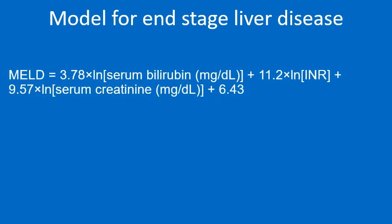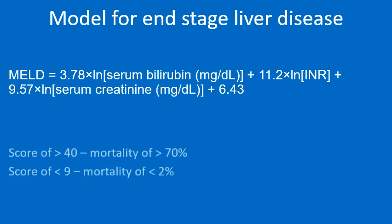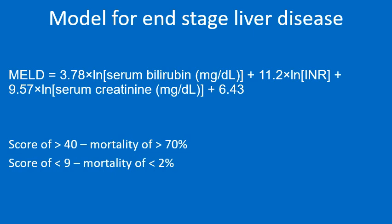The MELD (Model for End-Stage Liver Disease) score incorporates serum bilirubin, INR, and creatinine. The formula is: 3.78 × ln(serum bilirubin) + 11.2 × ln(INR) + 9.57 × ln(serum creatinine) + 6.43. When the score is more than 40, mortality risk is more than 70%. When the score is less than 9, mortality risk is less than 2%.